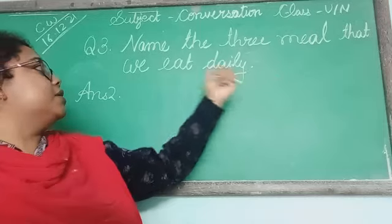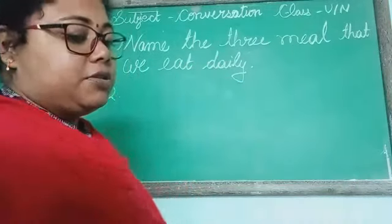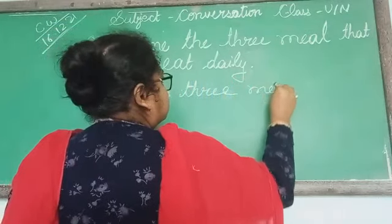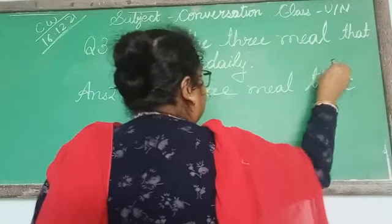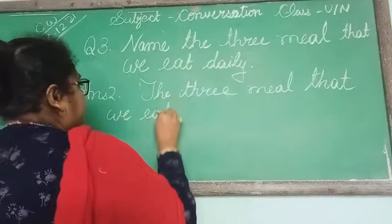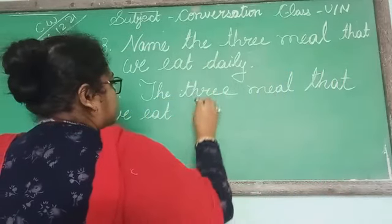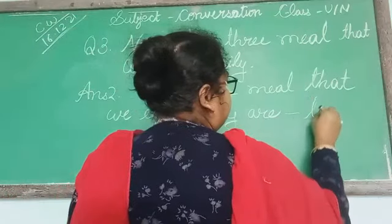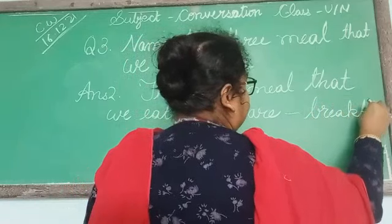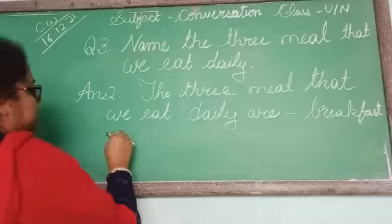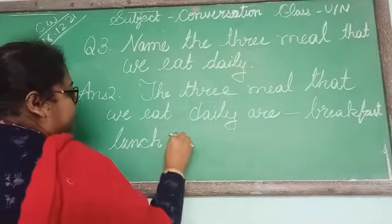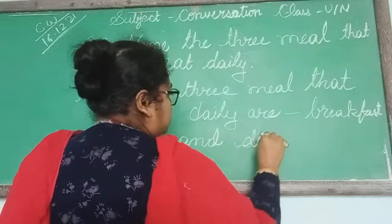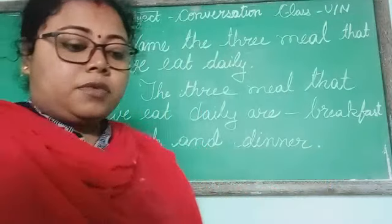What is the question? Name the three meals that we eat daily. You have to name them. So what are the three meals? Breakfast — B-R-E-A-K-F-A-S-T. Breakfast. Then number two is lunch — L-U-N-C-H. Lunch. And number three is dinner — D-I-N-N-E-R. Dinner. So this is the answer of this question.